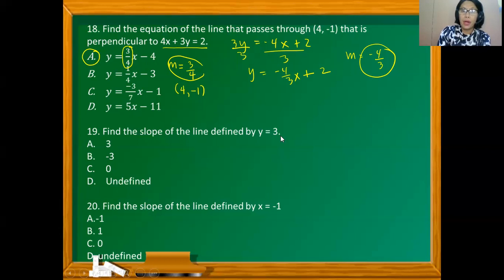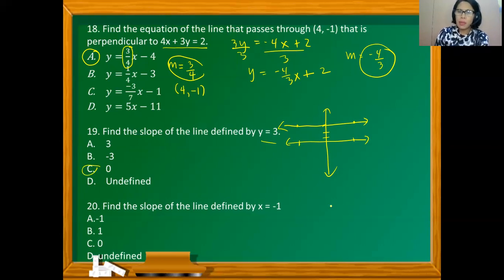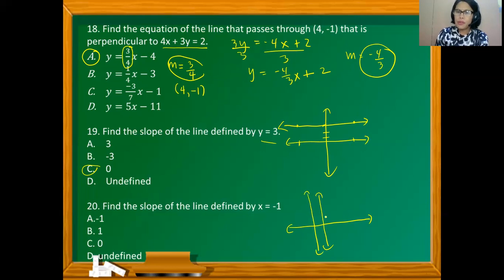Find the slope of the line defined by y = 3. This is a horizontal line with constant y-coordinate always equal to 3. Whatever the value of x, y remains 3. The slope of a horizontal line is 0. Now, find the slope of the line defined by x = −1. This is a vertical line with x-coordinate always equal to −1. Whatever the value of y, x remains −1. The slope of a vertical line is undefined.